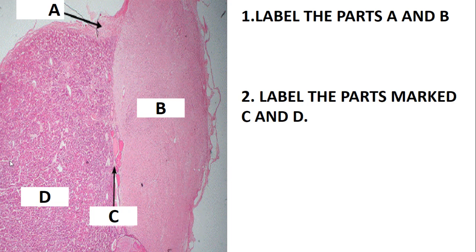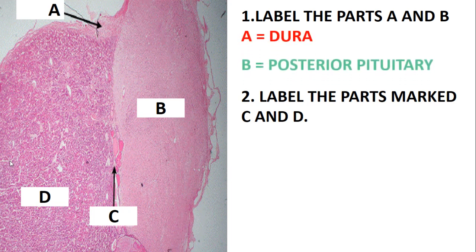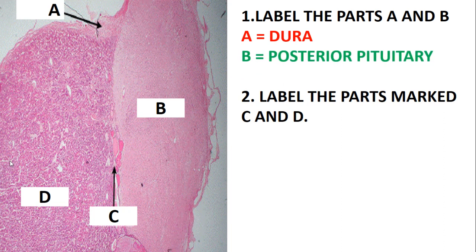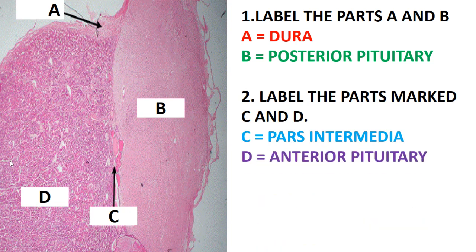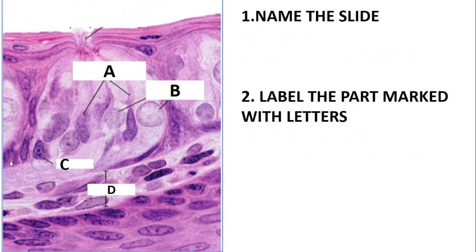This slide is the pituitary gland. The pituitary gland has two main parts — the anterior pituitary gland and the posterior pituitary gland — but there are also other components such as the pars intermedia, the dura mater, and the infundibulum. The part labeled A is the dura, B is the posterior lobe of the pituitary gland, C is the pars intermedia, and D is the anterior pituitary.